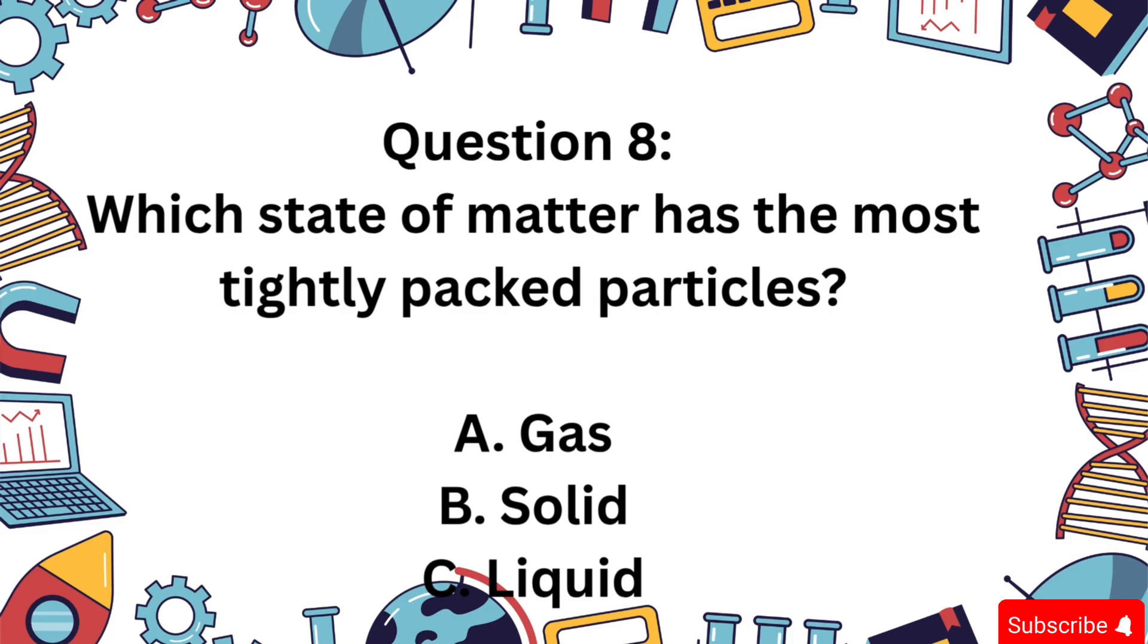Question 7: Which process changes a solid directly into a gas? Is it A) Melting, B) Sublimation, or C) Condensation? The correct answer is B, sublimation. Sublimation skips the liquid phase. Dry ice is a solid that turns straight into carbon dioxide gas.